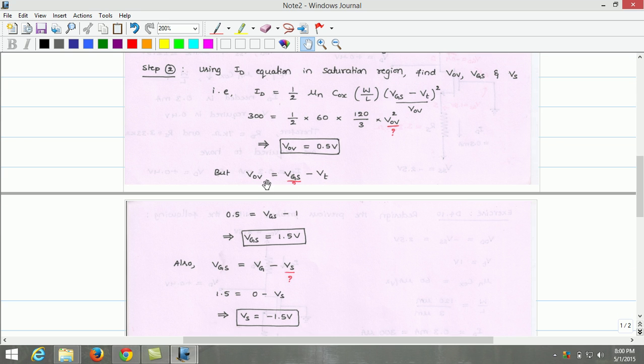But overdrive voltage is also related to the gate source voltage by this equation: overdrive voltage equals gate source voltage minus threshold voltage. Substituting the overdrive voltage value and threshold voltage, we can estimate gate source voltage needed. So gate source voltage needed is 1.5V.